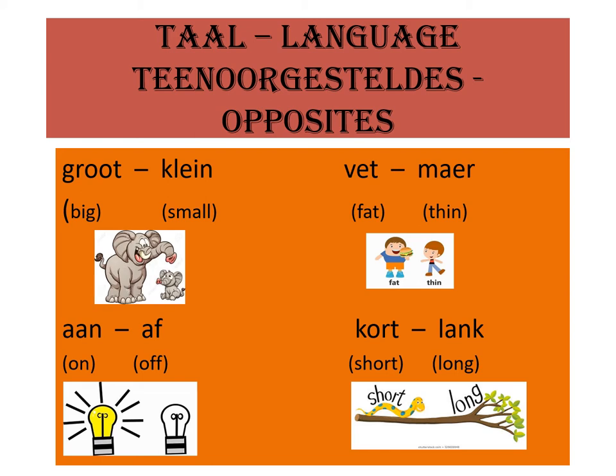Groot and klein — big and small. Vet and maar — fat and thin. Aan and af — on and off. Kort and lang — short and long.